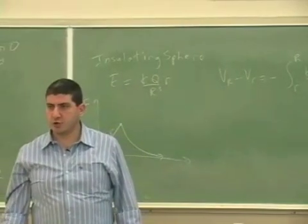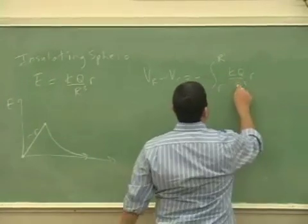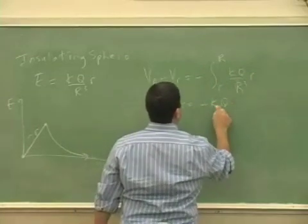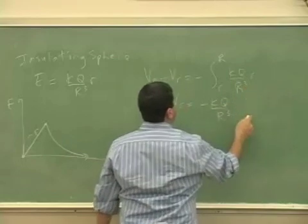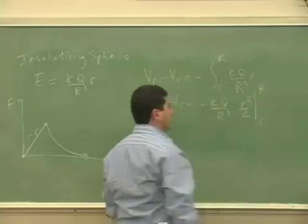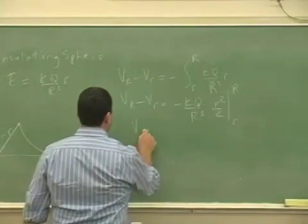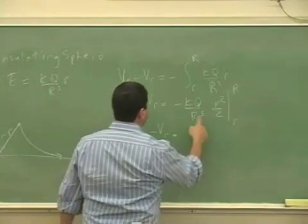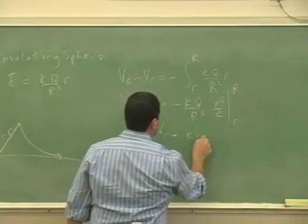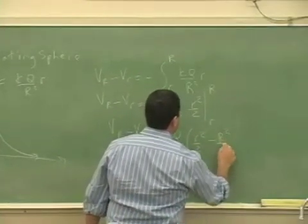Negative integral kq over R³ times r. This part here is a constant so I can factor it out. The integral of that is going to be r² over 2, evaluated from little r to big R. With the negative sign changing the limits, it's going to be r² over 2 minus R² over 2.